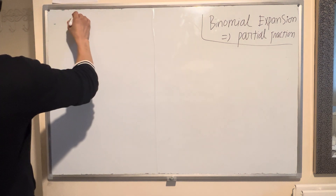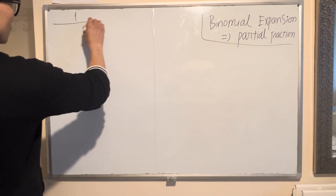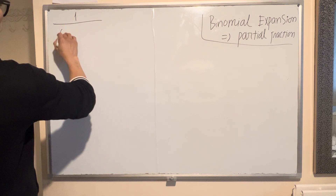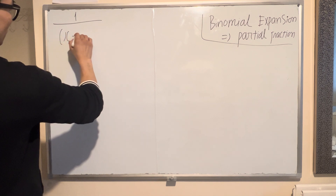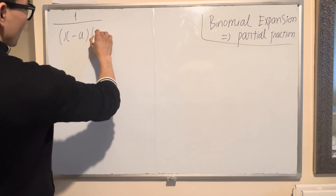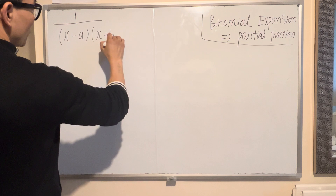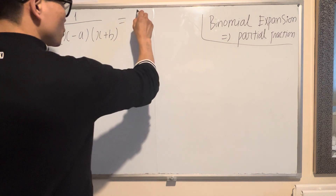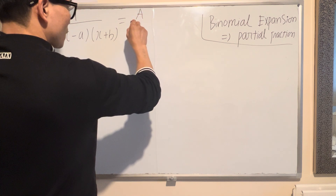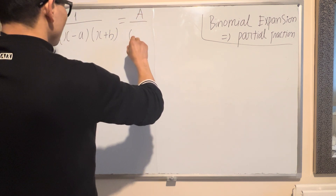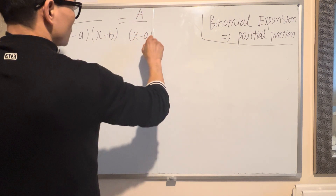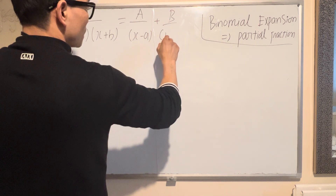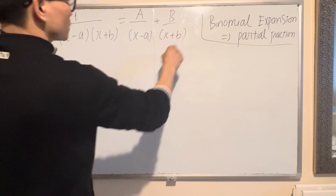First, if you have the binomial 1 over x times (x plus b), you can expand it into two fractions added together on the right hand side: A over x plus B over (x plus b).